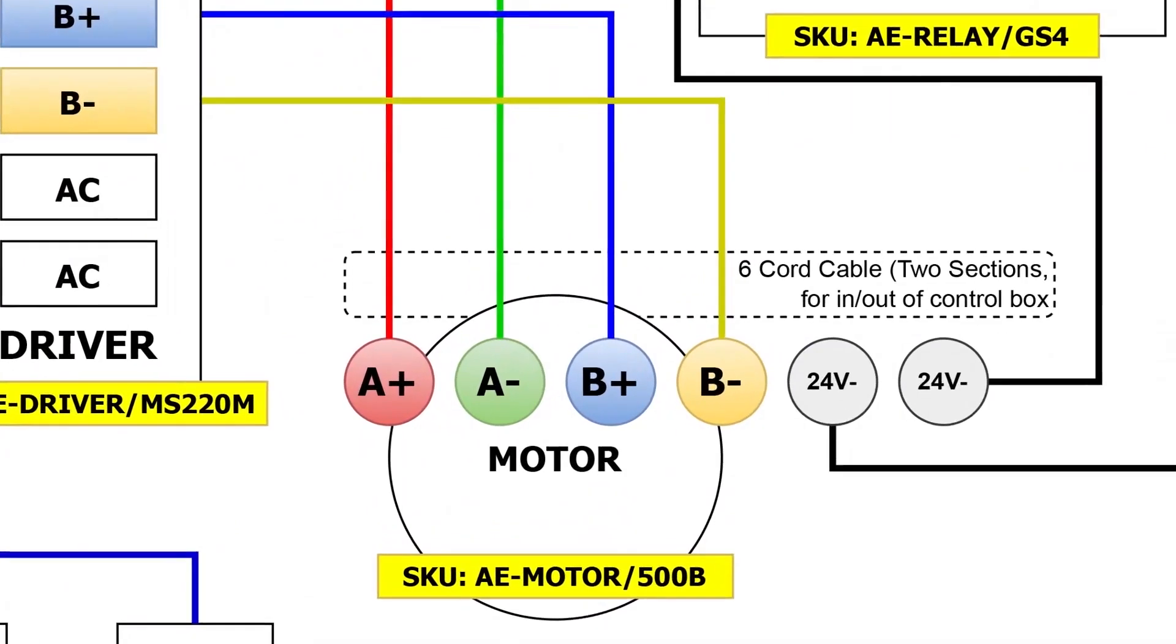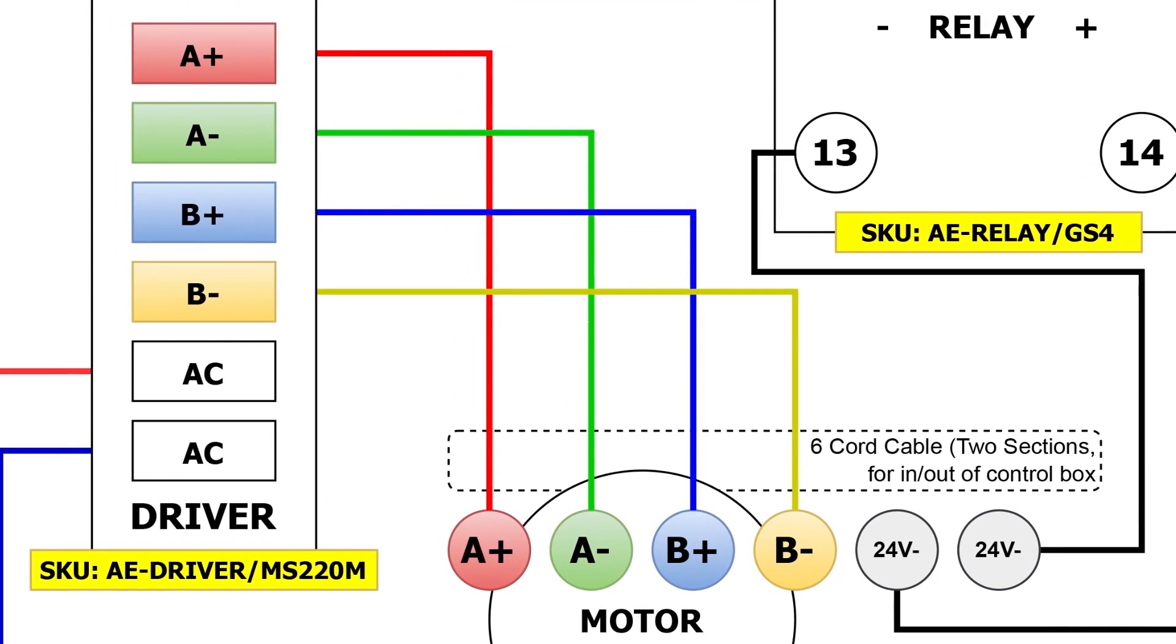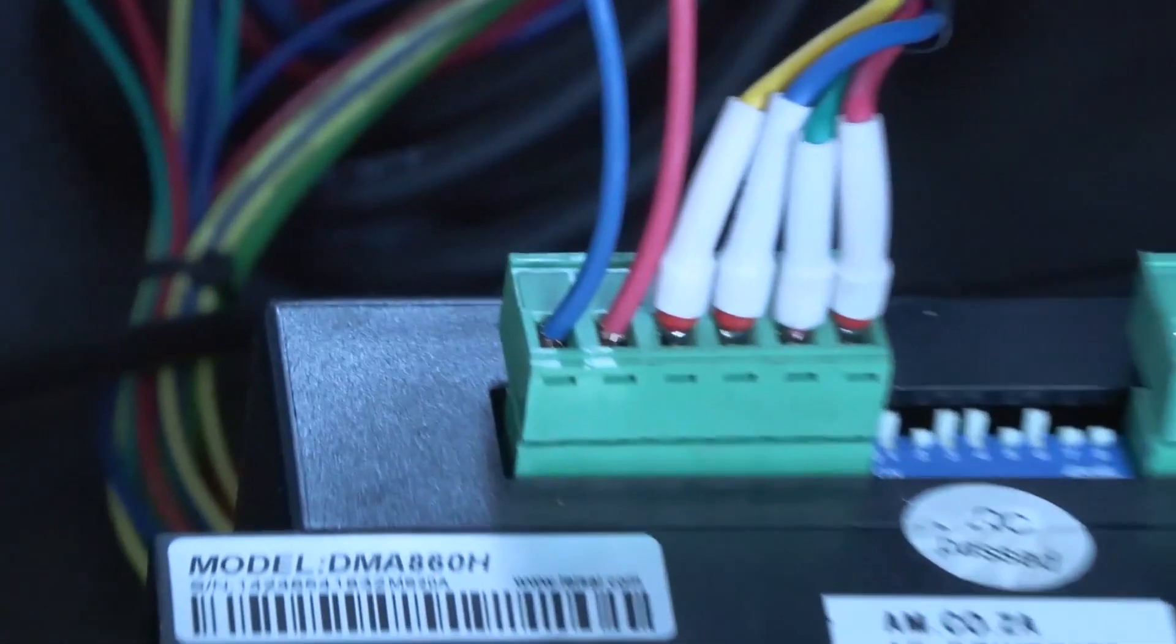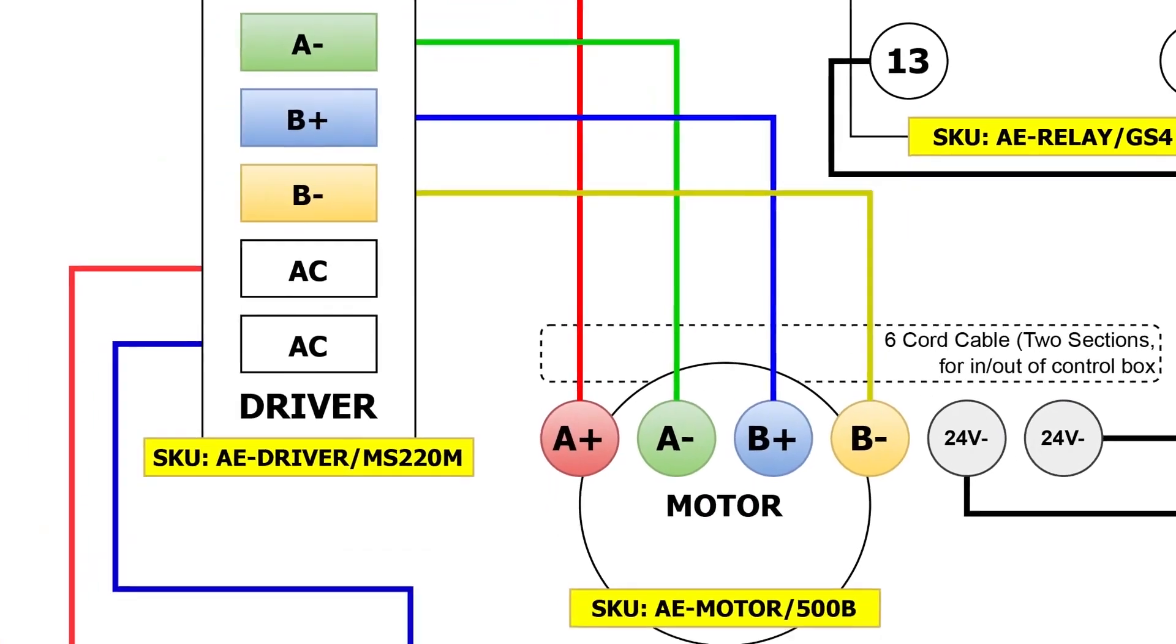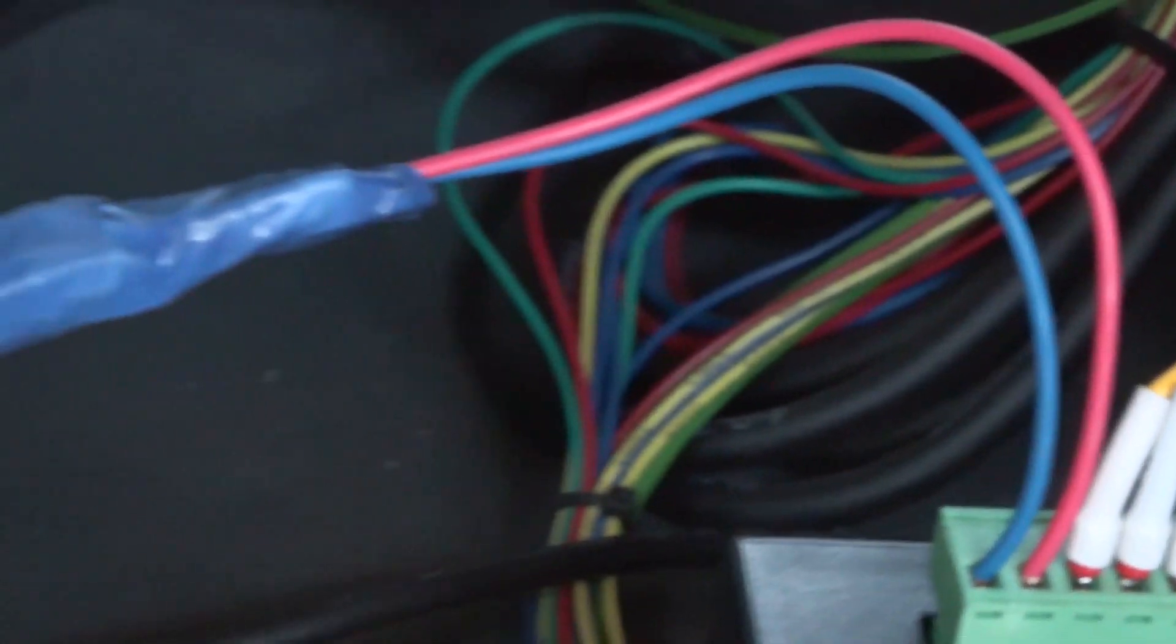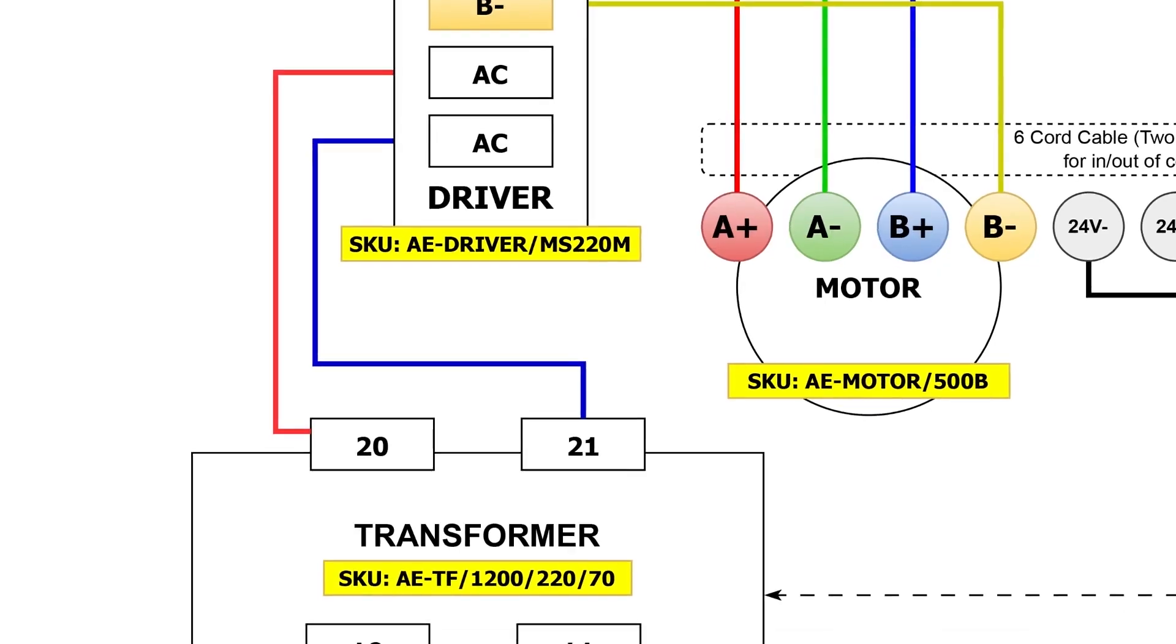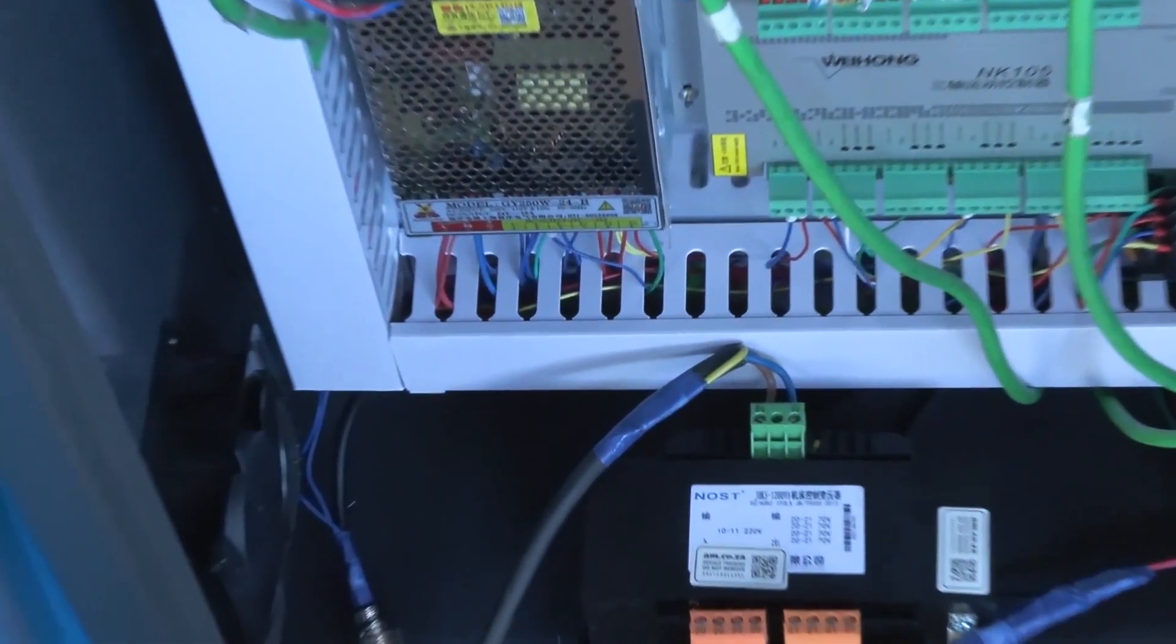Join A positive, A negative, B positive, and B negative on the motor terminals to A positive, A negative, B positive, and B negative terminals on the driver. The driver AC terminals go to terminals 20 and 21 on the transformer. Terminals 10 and 11 on the transformer are for 220 volts AC.